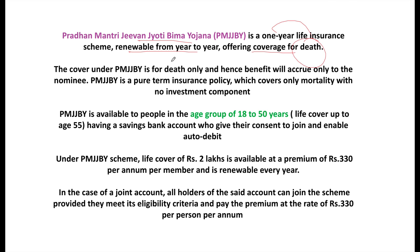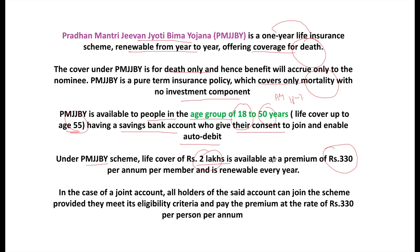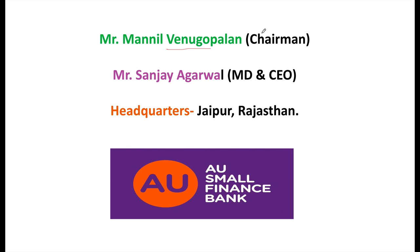PMJJBY is a one-year life insurance scheme, renewable from year to year, offering coverage for death only — it is not a health insurance or investment product, it is pure life cover with no investment component. It is available to people aged 18 to 50, with life cover up to age 55, who have a savings bank account and give consent for auto-debit. The life cover under PMJJBY is 2 lakh rupees at a premium of only 330 rupees per year. Note that Atal Pension Yojana covers ages 18 to 40. AU Small Finance Bank Chairman is Manil Venugopalan, MD & CEO is Sanjay Agarwal, headquartered in Jaipur, Rajasthan.